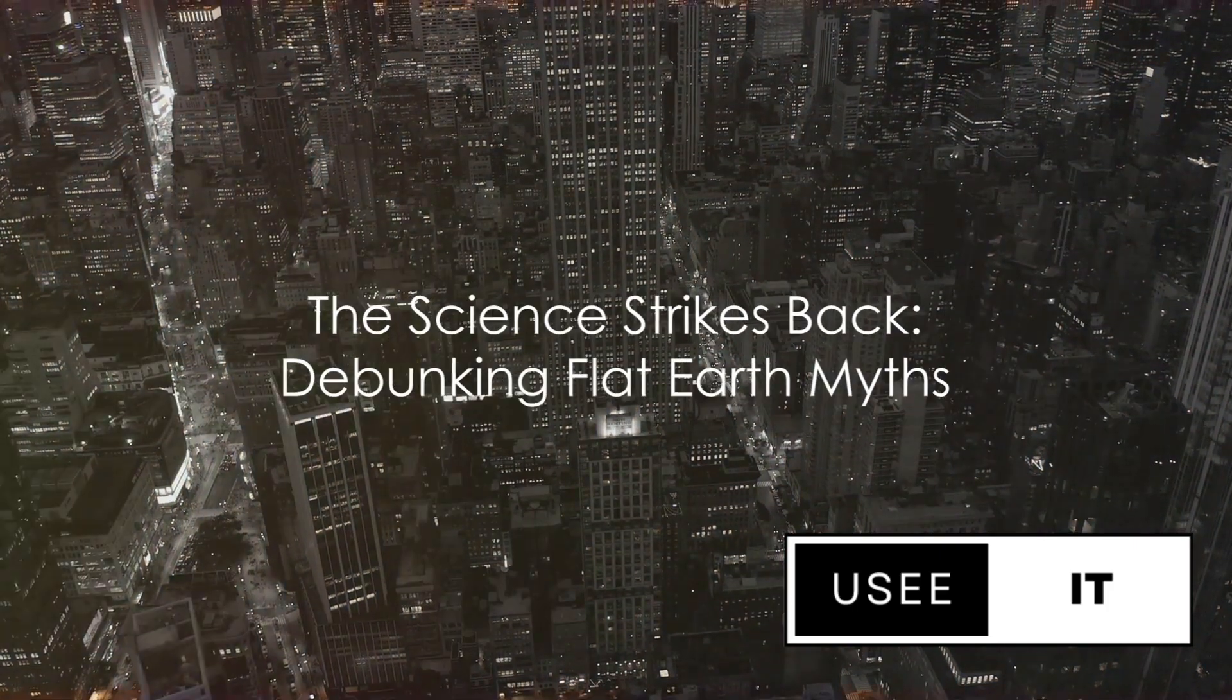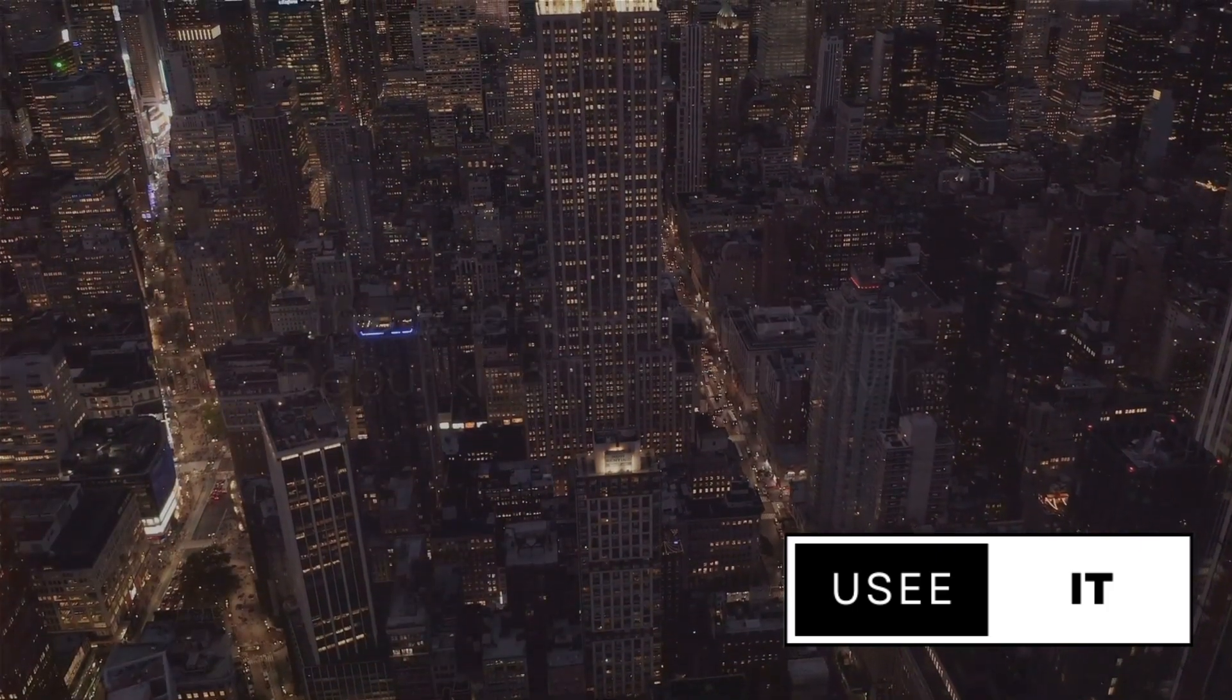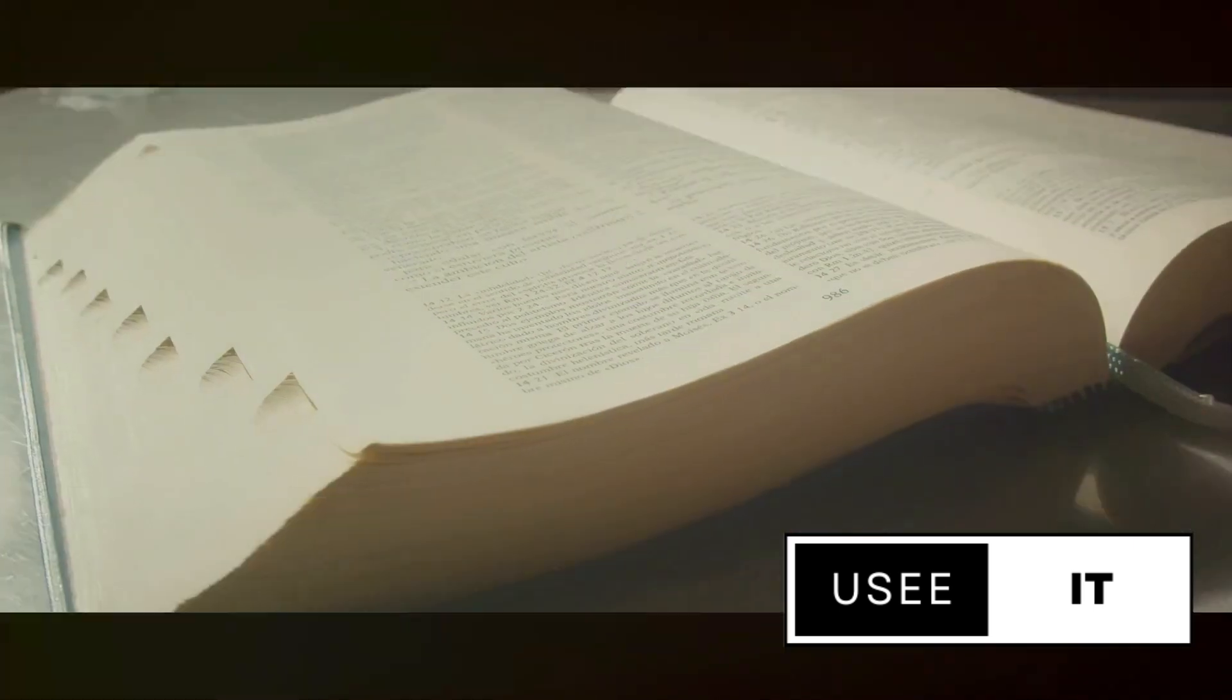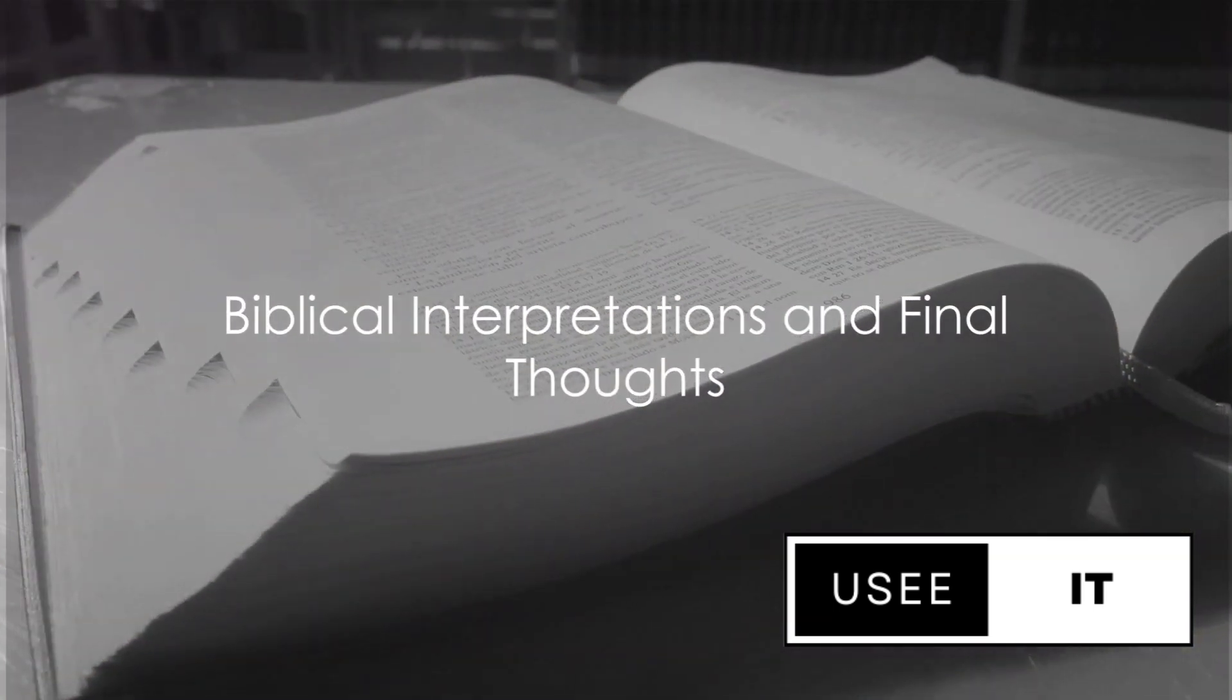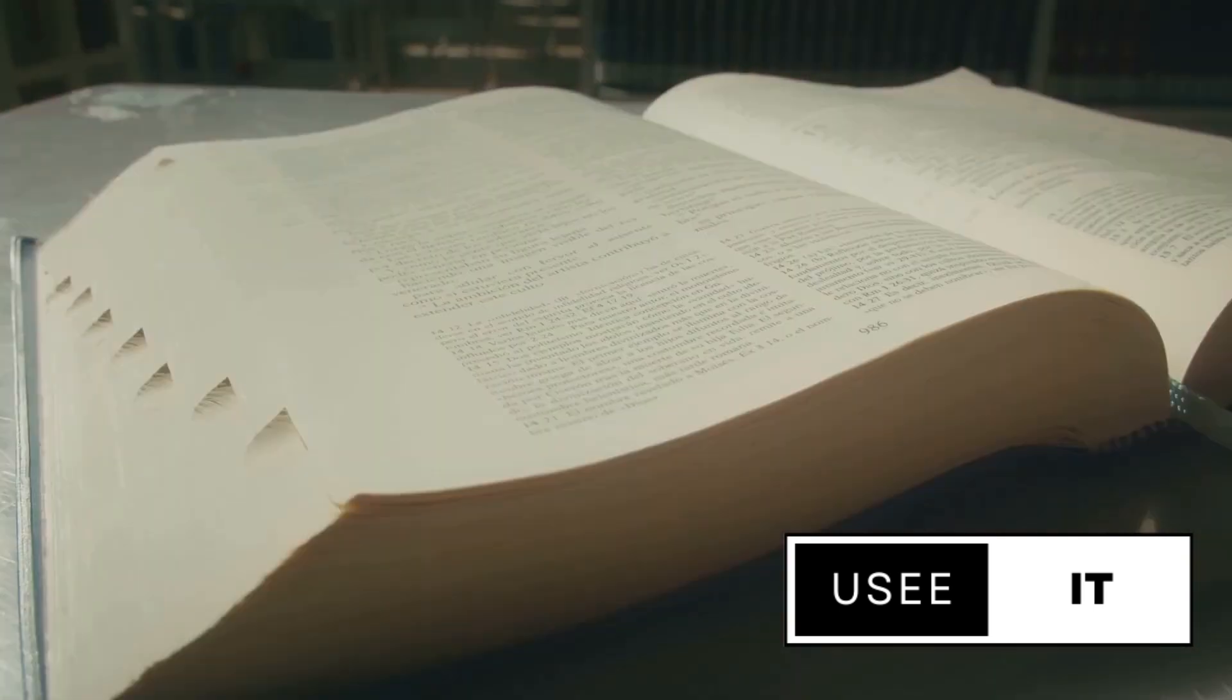So, the scientific consensus strongly supports the Earth being an oblate spheroid. But what about the Bible? Some flat-earthers argue that the Bible supports their belief, but is that really the case?